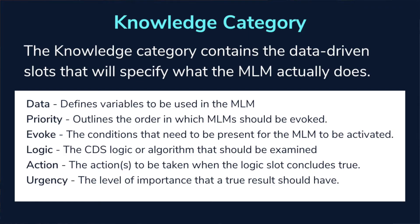The data slot defines what variables will be used in the MLM — what tables and pieces of information are leveraged to make it function, including how they're mapped to the clinical information system. The priority slot indicates what order the MLM should be evoked in. The conditions that need to be present for the MLM to be activated live in the evoke slot. The logic slot contains the algorithm or clinical decision support to be examined, along with the actions to be taken when that logic concludes to be true. Finally, the urgency slot defines the level of importance a true result should have — for example, whether something should happen immediately or with a time delay.